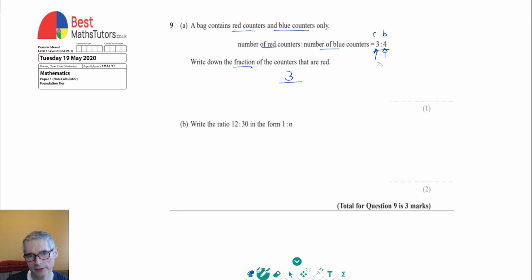If we add them together, we'll get 7. So it's three-sevenths of the counters that are red.